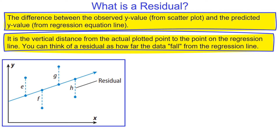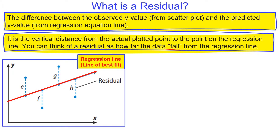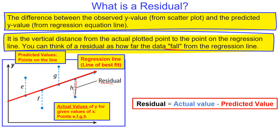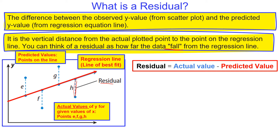You can think of a residual as how far the data falls from the regression line. Looking at this graph, we're looking at how far the data is from the regression line, which is also called the line of best fit or fit line. Your predicted values are the points on the line, and your actual values are the points not on the line. The residual is that space between your line of fit and the actual point.